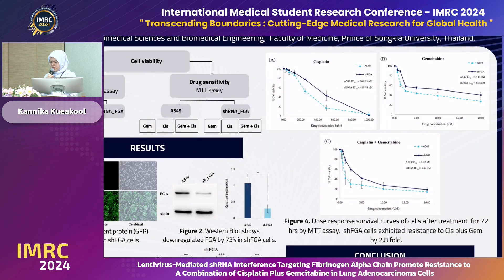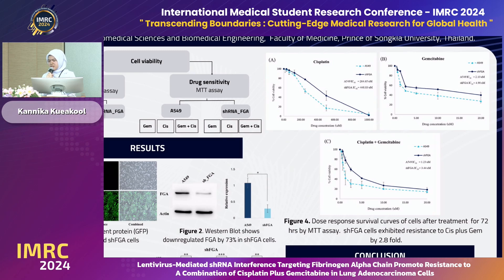Figure 4 shows the MTT results from the dose-response curve. The solid line represents shFGA cells and the dashed line represents A549 cells for single chemotherapy. shFGA was resistant to cisplatin 1.7-fold and resistant to gemcitabine 2.3-fold. When the two were combined, shFGA cells were obviously resistant to this regimen at 2.8-fold.